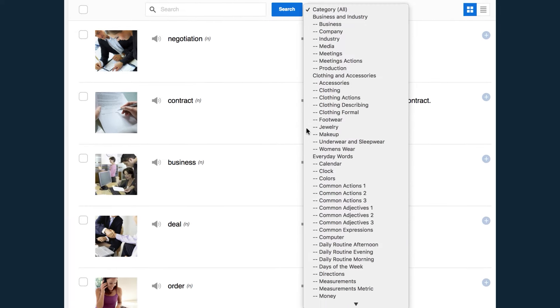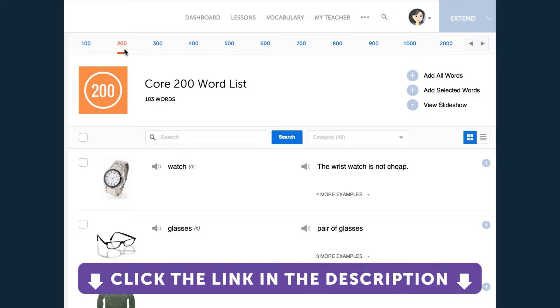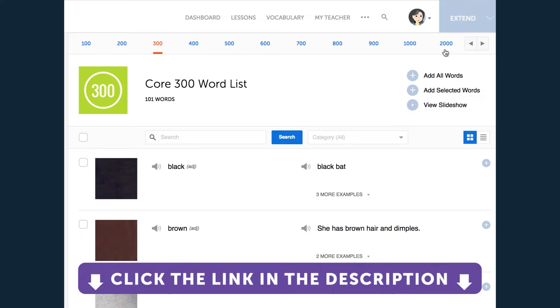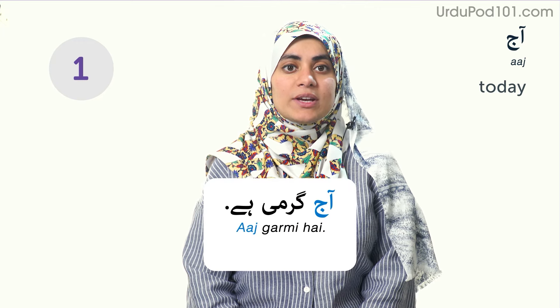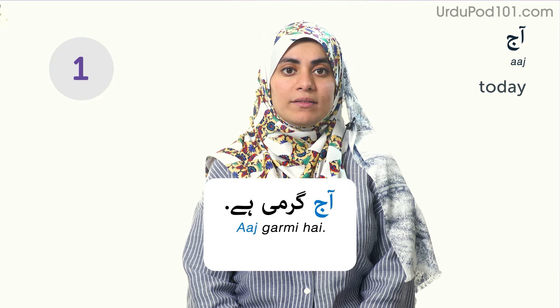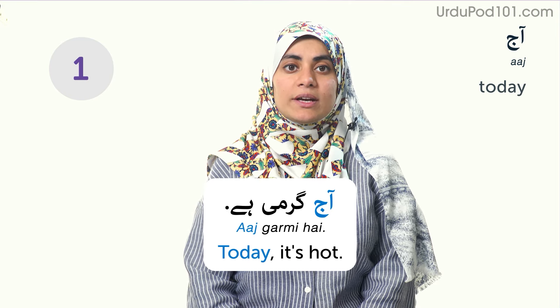Click the link in the description to access more example sentences, create your own flashcard deck, and finally master Urdu. Let's get started. First is aaj — today. Aaj garmi hai — today it's hot.